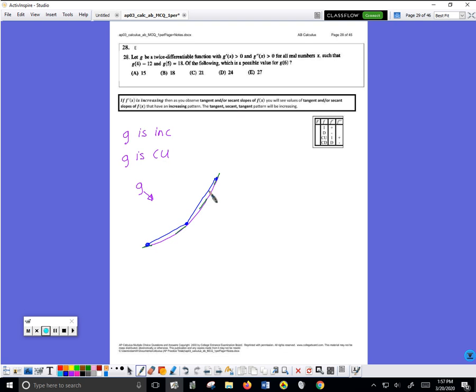So when I see that G is concave up, I'm thinking of this. They tell me G of 4, so perhaps this point is at 4 comma 12. And then the next point they tell me about is 5 comma 18. Then they ask what could be a value of G when x is 6.